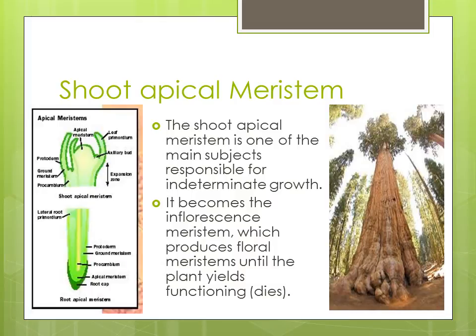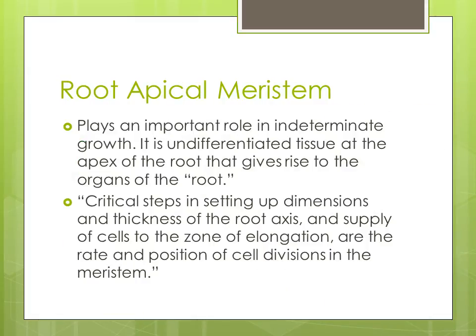As the apical meristem dies, it can no longer produce floral meristems continuously. Now we're going to talk about the root apical meristem, which plays an important role in indeterminate growth. It is undifferentiated tissue at the apex of the root that gives rise to the organs of the root. Critical steps in setting up the dimension and thickness of the root axis are the rate and position of cell divisions in the meristem.